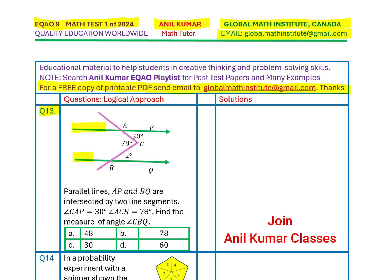Angle CAP equals to 30 degrees. So, CAP is this angle. Angle CAP is 30 degrees. Angle ACB, ACB is 78 degrees. Find the measure of angle CBQ. So, we want to find this angle CBQ, which is X degrees. Four options are given to you.